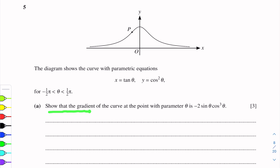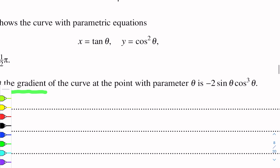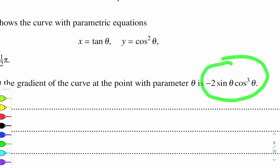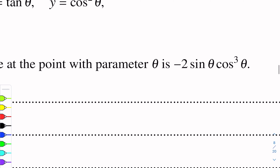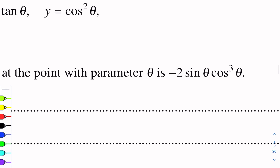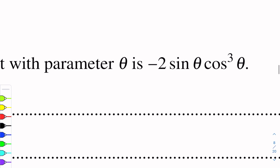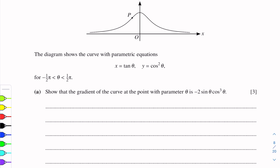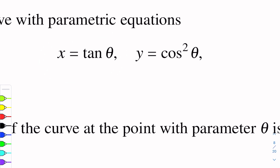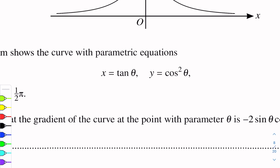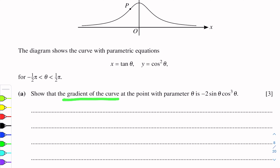Show that the gradient of the curve at the point with parameter theta is minus 2 sin theta cos cubed theta. We will show the gradient. The curve gradient is minus 2 sin theta cos cubed theta. Parametric equations are given. We will differentiate each equation with respect to theta, then use the chain rule to find the gradient of the curve.